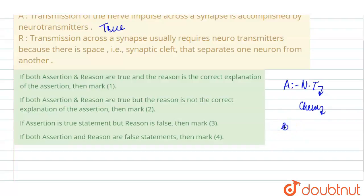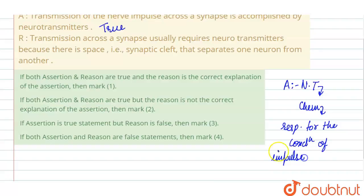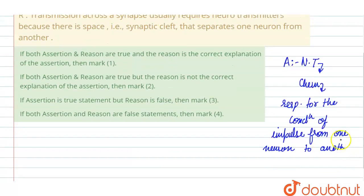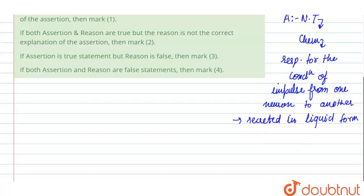Neurotransmitters are the chemicals responsible for the conduction of impulse from one neuron to another. These neurotransmitters are secreted in liquid form, which are released by the end of the neuron.